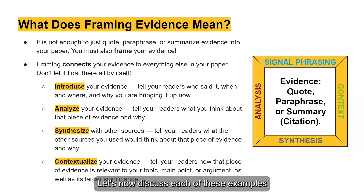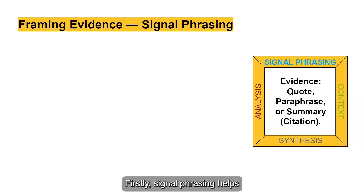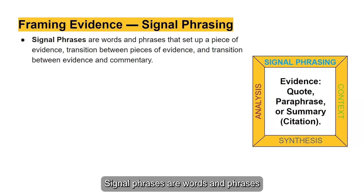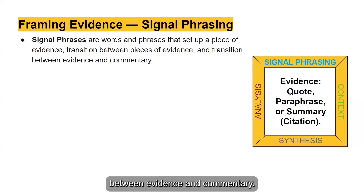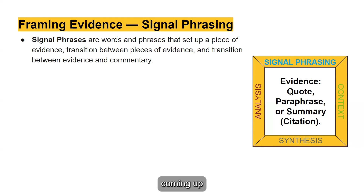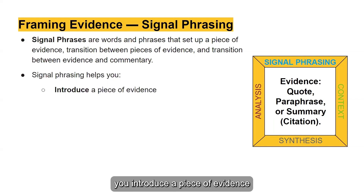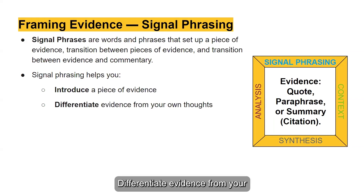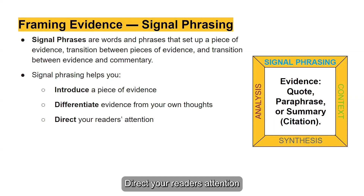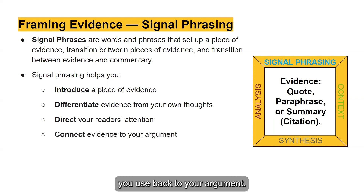Let's now discuss each of these examples of framing evidence in more detail. Firstly, signal phrasing helps you introduce your evidence to a reader. Signal phrases are words and phrases that set up a piece of evidence, transition between pieces of evidence, and transition between evidence and commentary. Using signal phrasing helps you introduce a piece of evidence to your reader, differentiate evidence from your own thoughts and commentary, direct your reader's attention to specific parts of the evidence, and connect evidence back to your argument.